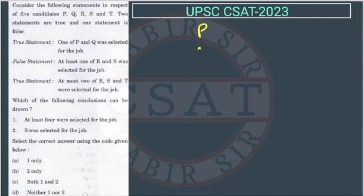So, how many candidates are there? P, Q, R, S, T. Two statements are true and one statement is false. Let's read the first true statement.